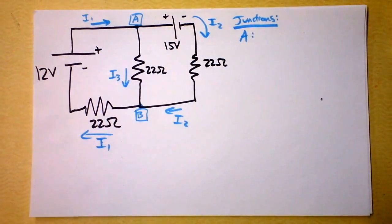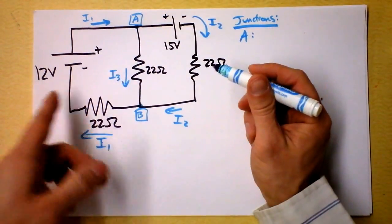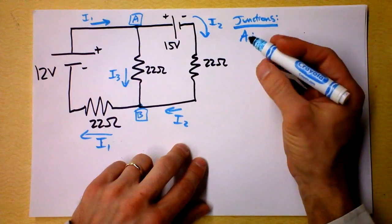This current over here, what's this guy going through here? That current is I1 again. Alright, so we've got current 2, current 3 and current 1 over in this leg and they could of course be very different from one another.